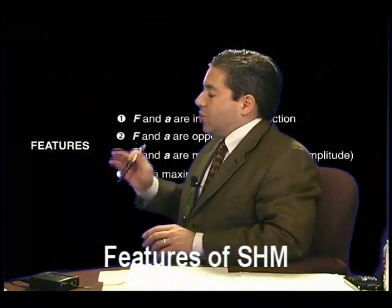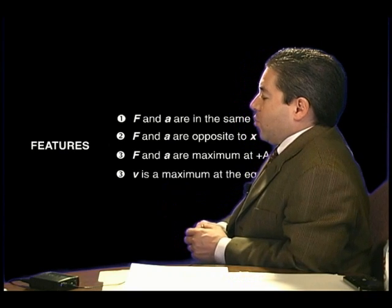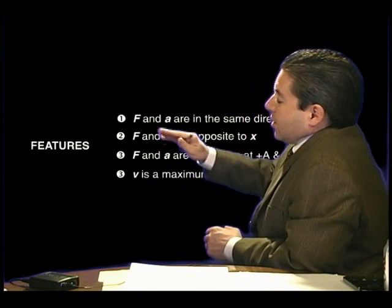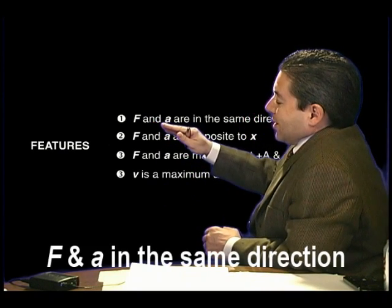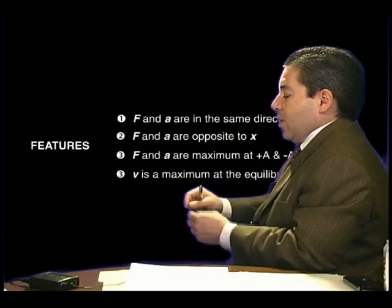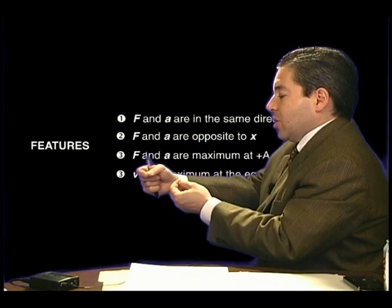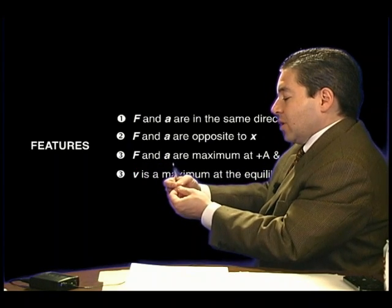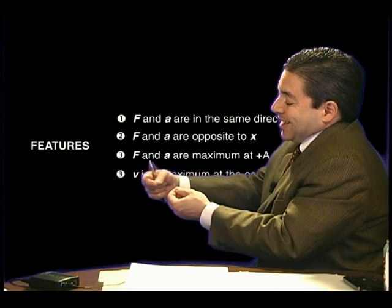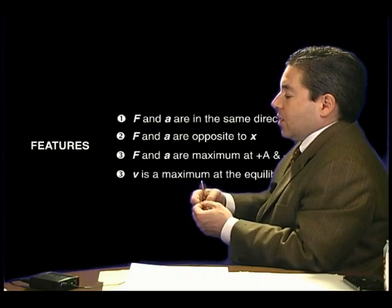Let's look at the features of simple harmonic motion from a physics standpoint. First of all, force and acceleration are in the same direction. So if you have an object and you perturb it away from that equilibrium position, the force will be back to the equilibrium position, the acceleration is back to the equilibrium position.